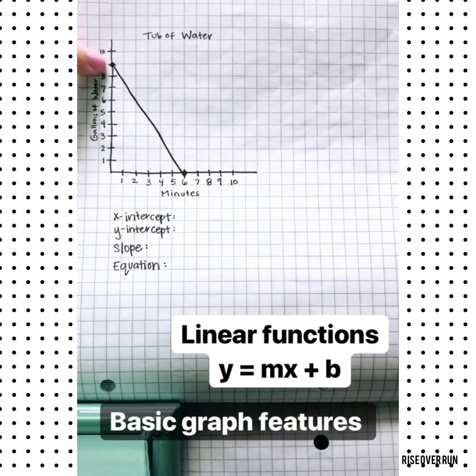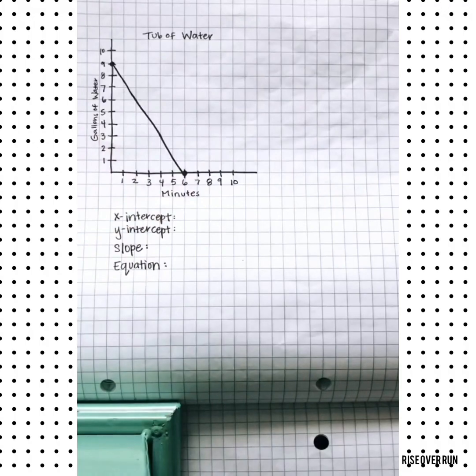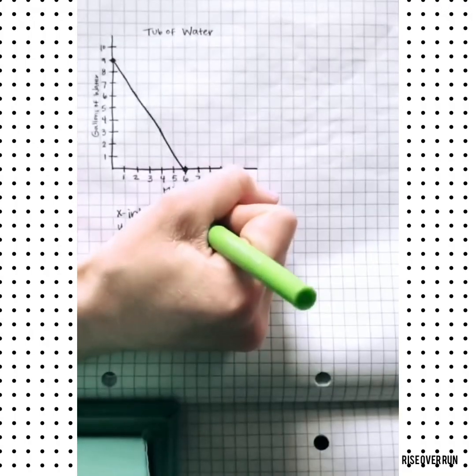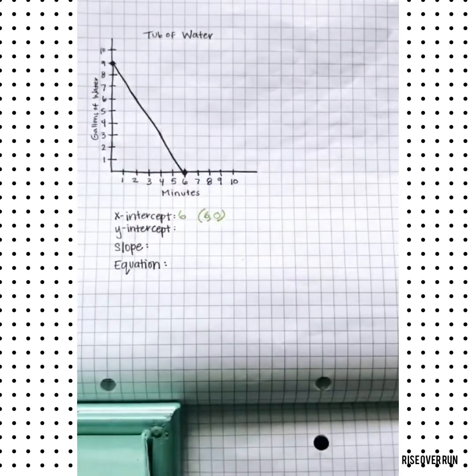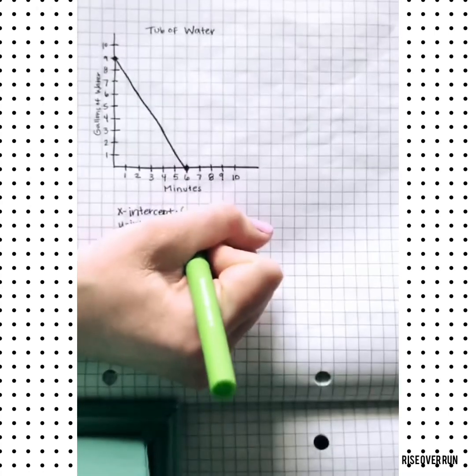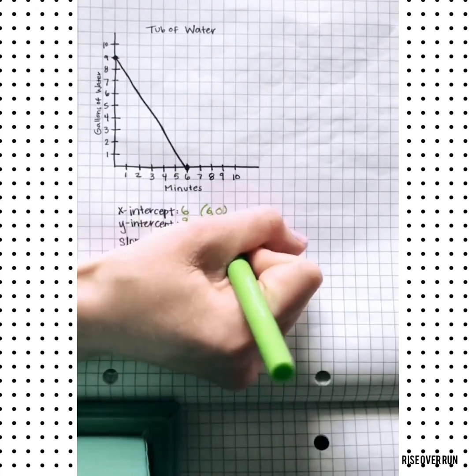Here on the y-axis is the y-intercept, here on the x-axis is the x-intercept, so we can fill those in here. 6, and if you're going to write the ordered pair, it always goes x, then y, the y-intercept of 9, so we would write it 0, 9.